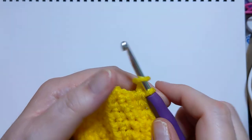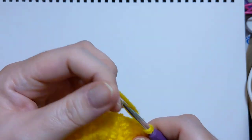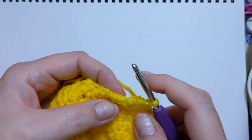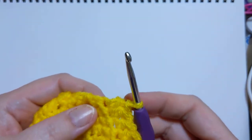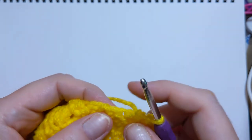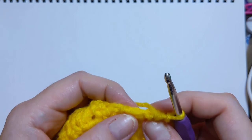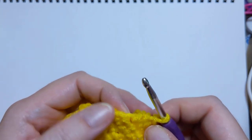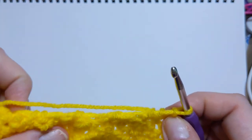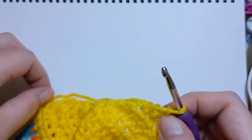Before I get too many more rows done, I want to show you one of the peculiarities of the way that I'm doing this by not chaining when I turn my work. I have eight stitches currently. My ninth stitch is down here on the side. Because I'm not chaining when I do my work. Now, I like the edge that that gives me, the slope.